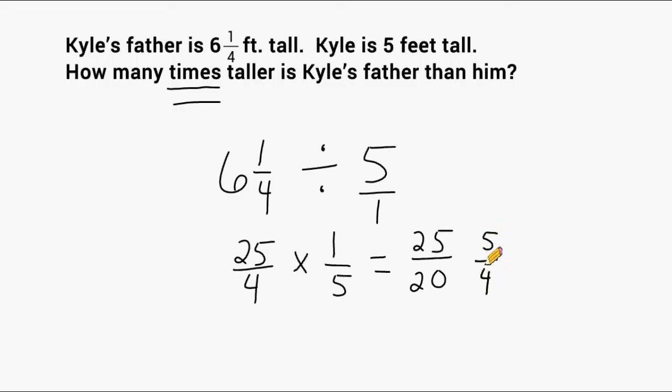Now we can take our improper fraction of 5 quarters and rename that as a mixed number. And to do that, you really just divide your numerator by the denominator. 5 divided by 4 is 1 with 1 left over. But that left over we use to express as our numerator over a denominator. So we would say that 5 quarters is equivalent to 1 and 1 fourth.